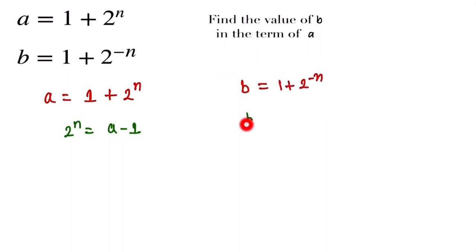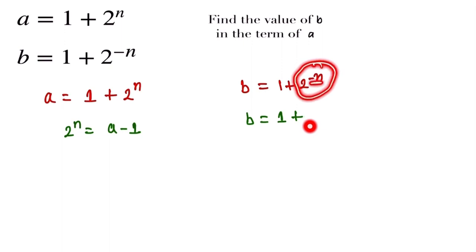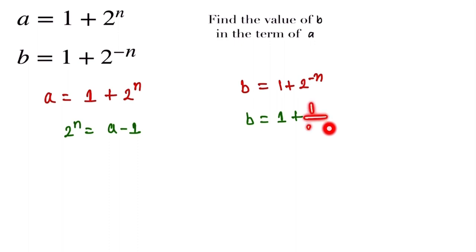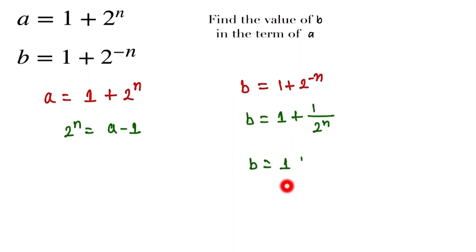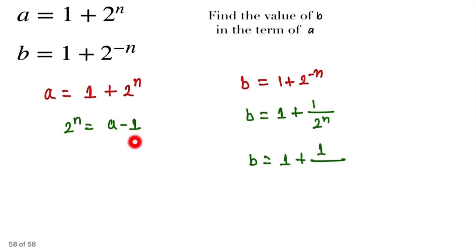Now we focus on b, which is equal to 1 plus 2 to the power minus n. The term 2 to the power minus n can be written in inverse form — because of the negative power — as 1 over 2 to the power n. So now we substitute the value of 2 to the power n, giving us b equals 1 plus 1 over (a minus 1).